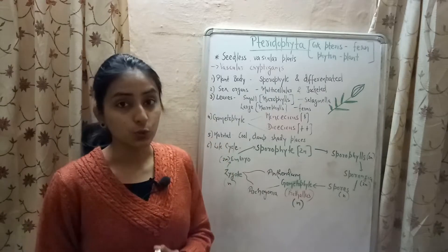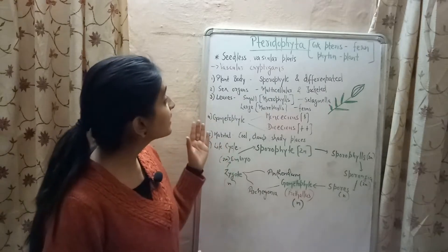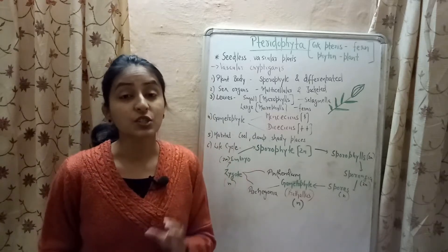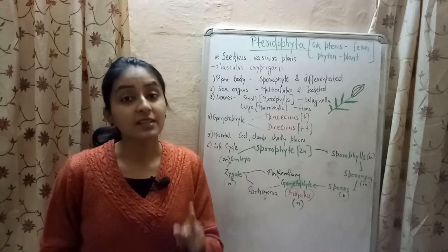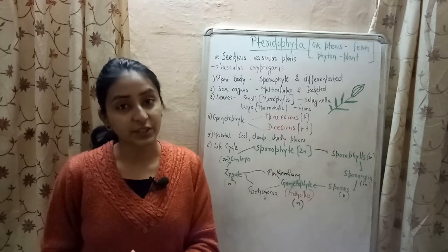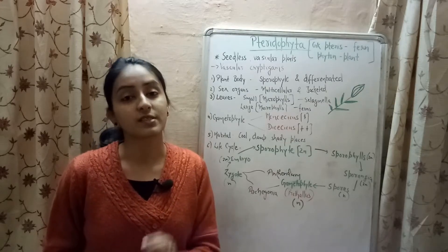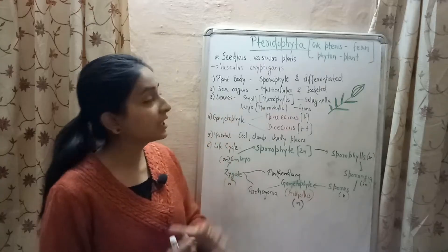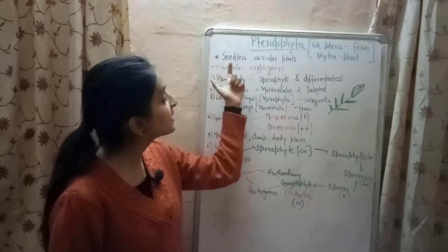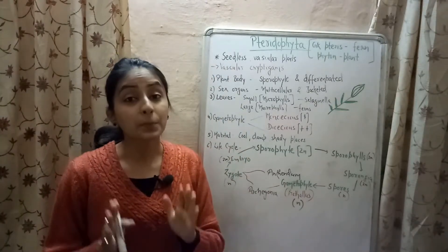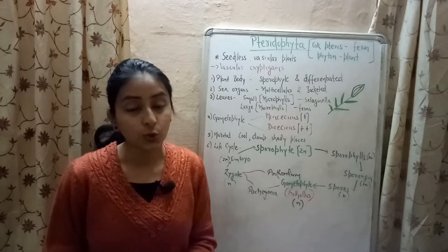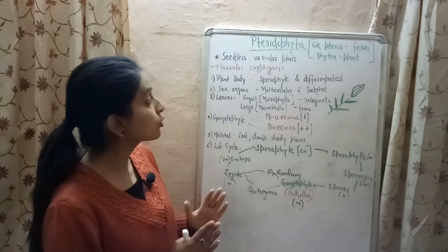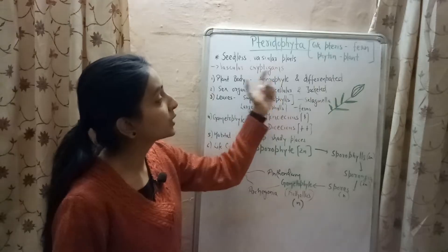Pteridophyta includes seedless vascular plants. It is a division of plants in which seeds are absent and the vascular system — called xylem and phloem — are present. So, pteridophyta includes seedless vascular plants. Because the vascular system is present, this division is also known as vascular cryptogams.